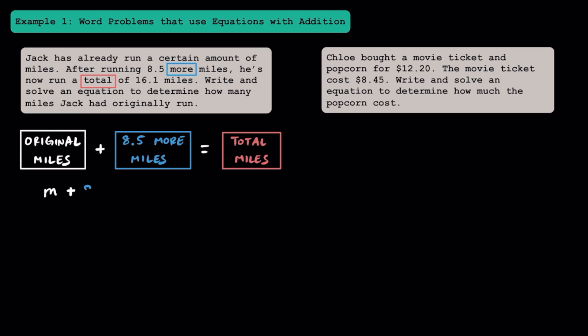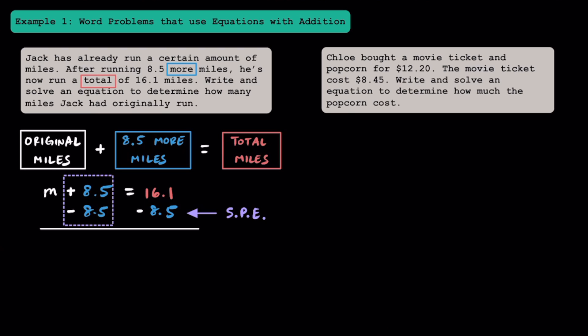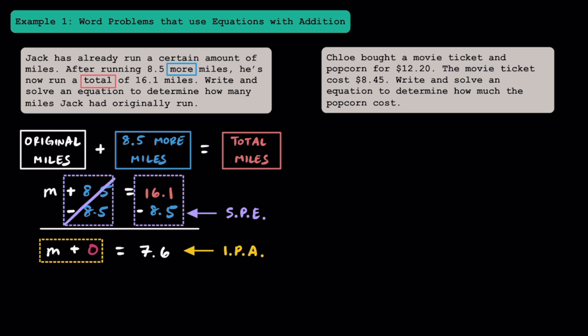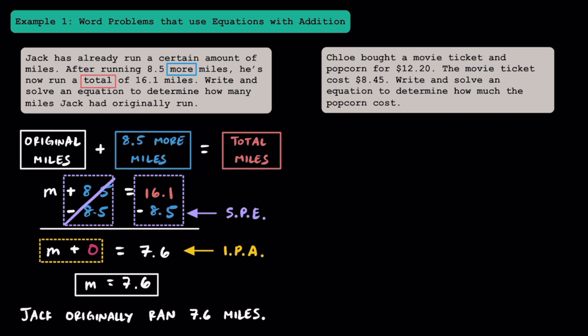I'm going to add on the 8.5 miles that he ran additionally, and adding these two together we should get the total miles, which is 16.1 miles. Using the subtraction property of equality, I'm going to subtract 8.5 from both sides to create opposites, which makes zero. On the left side, we're left with M plus zero, and on the right side, 16.1 minus 8.5 is equal to 7.6. Using the identity property of addition, we drop the zero and write that M is equal to 7.6. Using a one-step equation and some properties, we were able to figure out that Jack originally ran 7.6 miles.